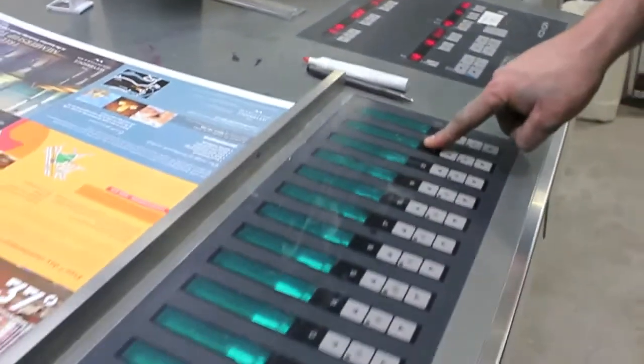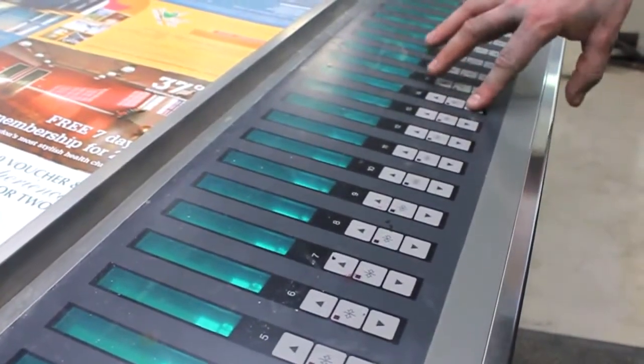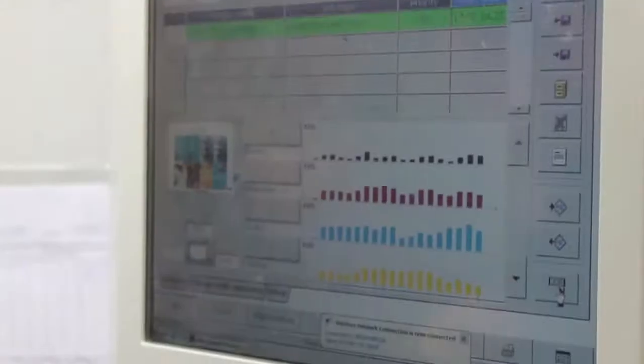After this machine settings are adjusted to compensate for any problems. This quality control process is repeated throughout the print run to ensure a high quality final product.